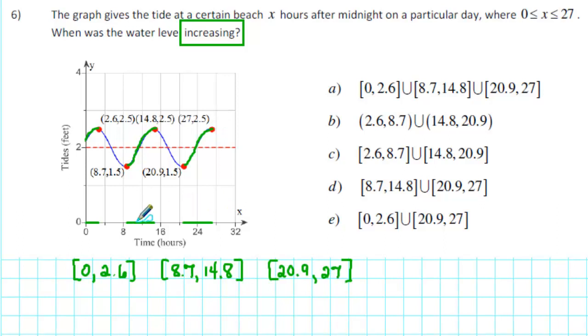Therefore, the water level was increasing on the interval 0 to 2.6 union 8.7 to 14.8 union 20.9 to 27. The correct answer is A.